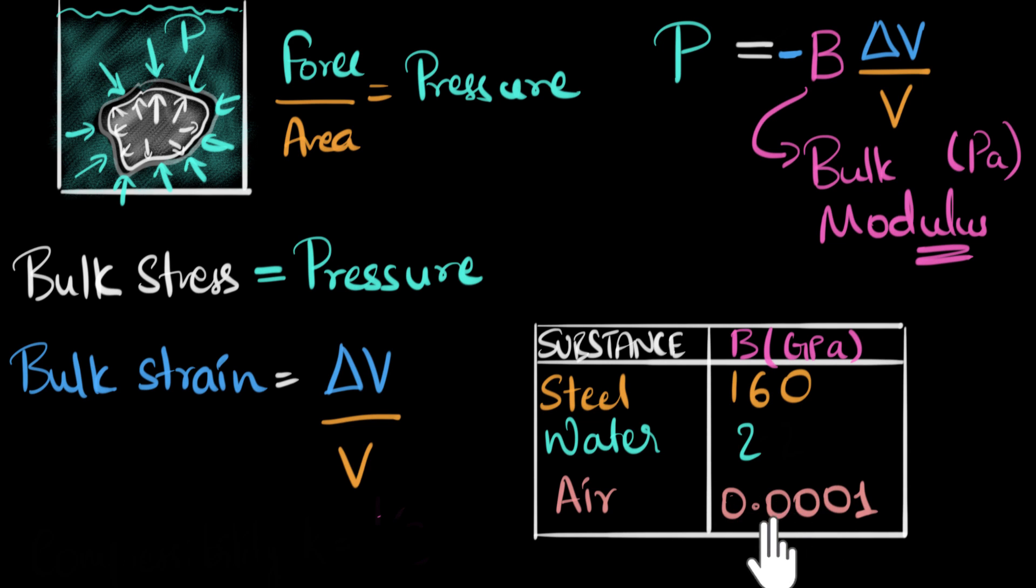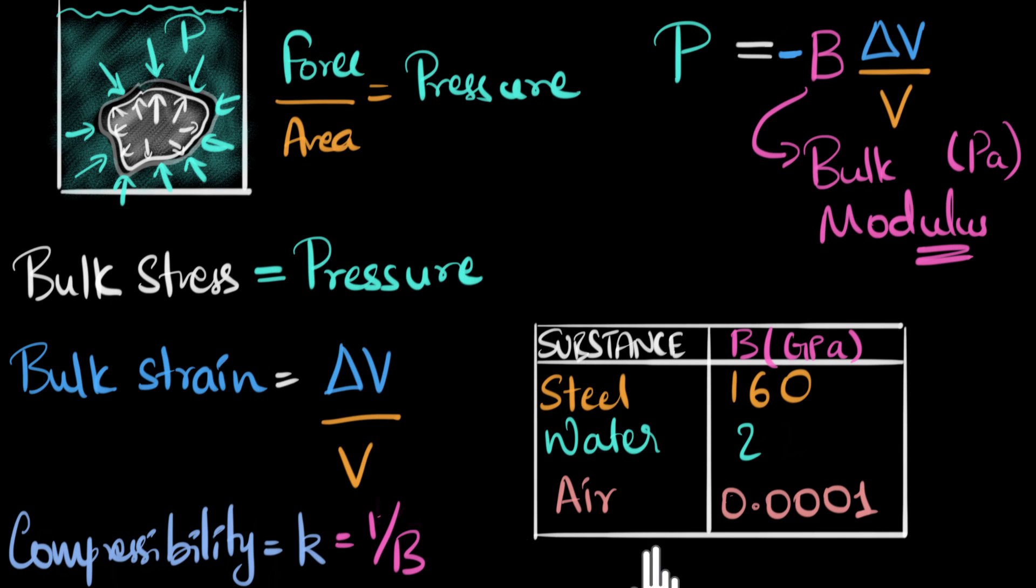And therefore, I hope you can see that the compressibility factor or how easy it is to compress something is actually inversely related to bulk modulus. And it's for that reason we actually define something called compressibility, and the name itself tells you what it is. It's a number that tells you how easy it is to compress something, and we define that as the reciprocal of the bulk modulus. And so from that, from the compressibility point of view, air has a high value of compressibility, and steel, for example, has a low value of compressibility.